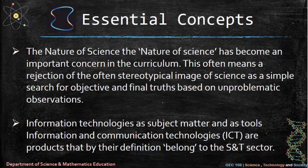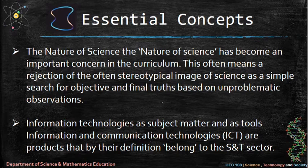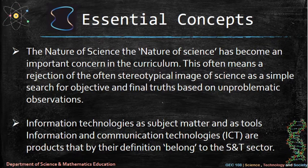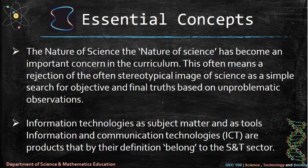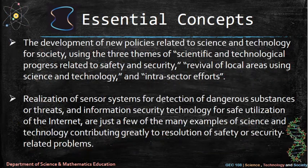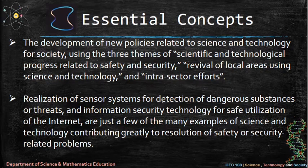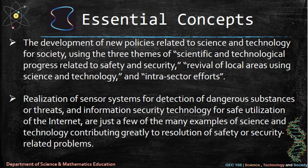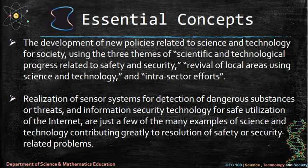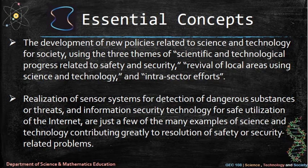Twelve: information technologies as subject matter and as tools. Information and communication technologies (ICT) are products that by definition belong to the science and technology sector. Thirteen: new policies related to science and technology for society use three themes — scientific and technological progress related to safety and security, revival of local areas using science and technology, and intra-sector efforts. Examples include sensor systems for detection of dangerous substances and information security technology for safe utilization of the internet.